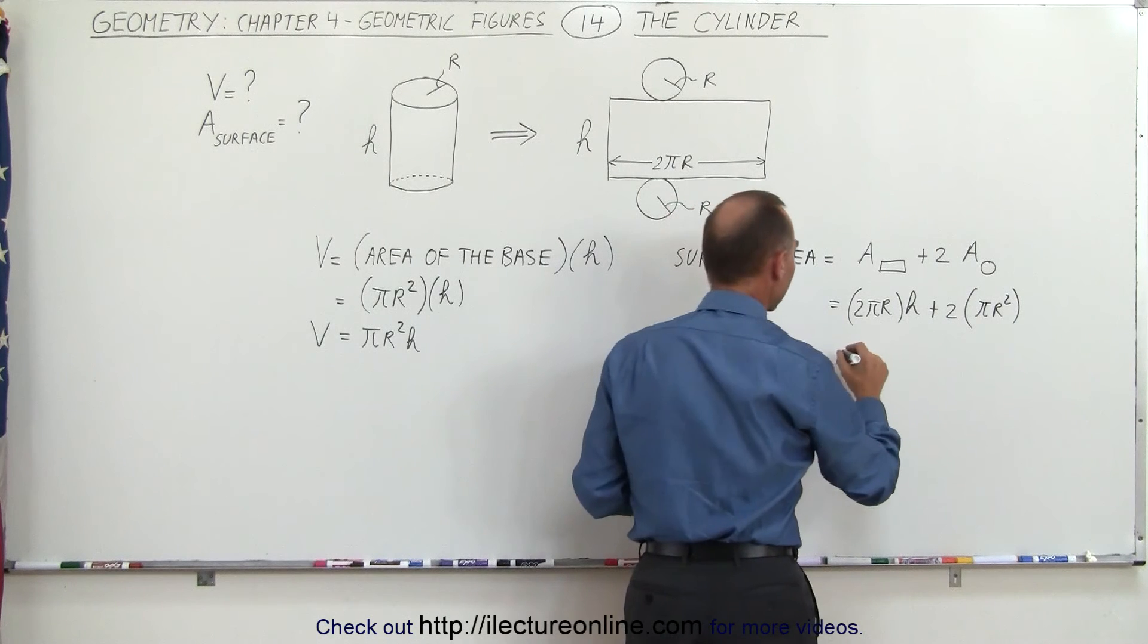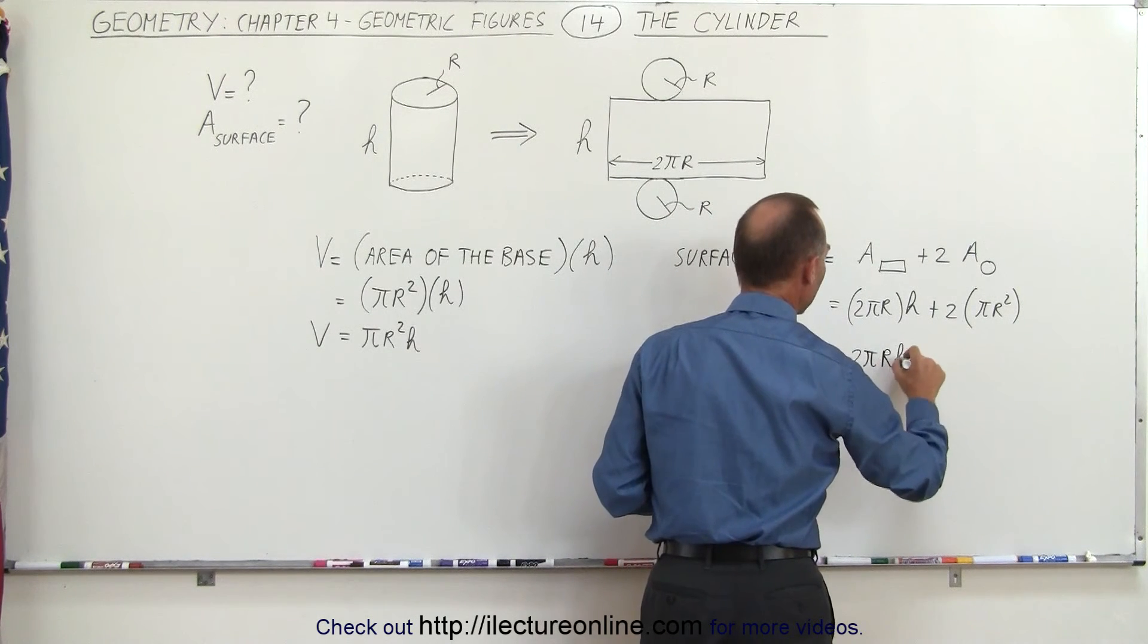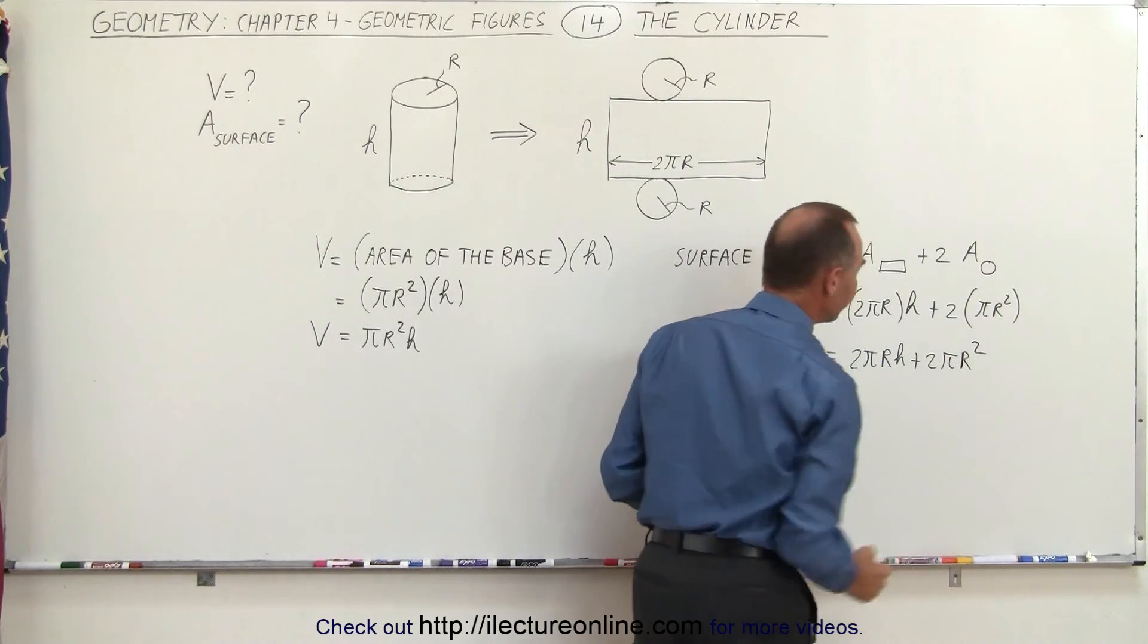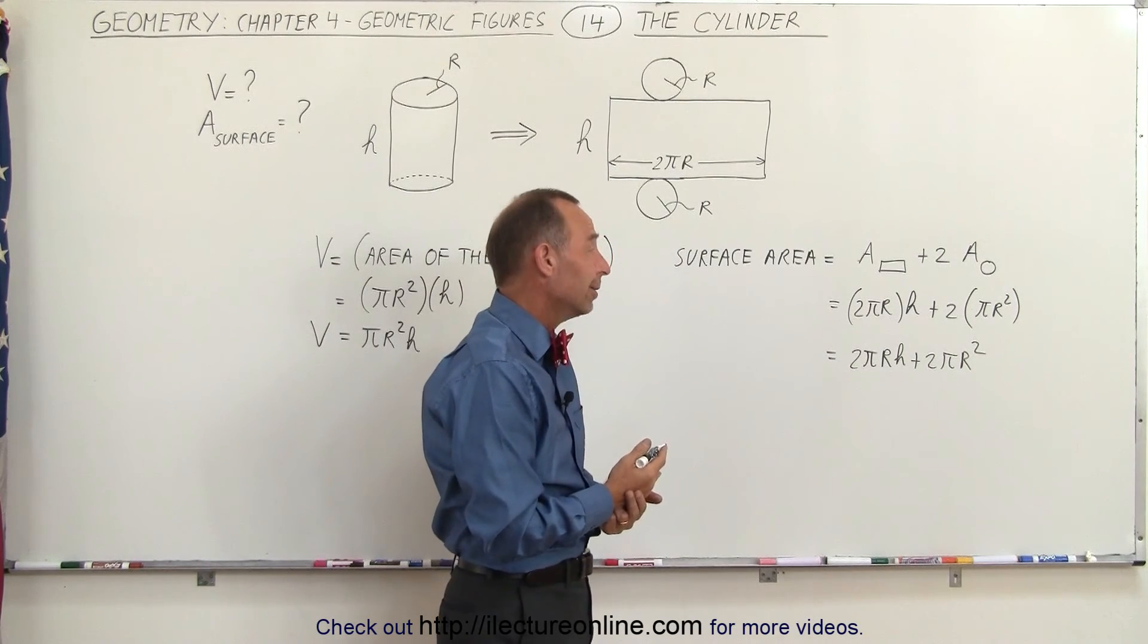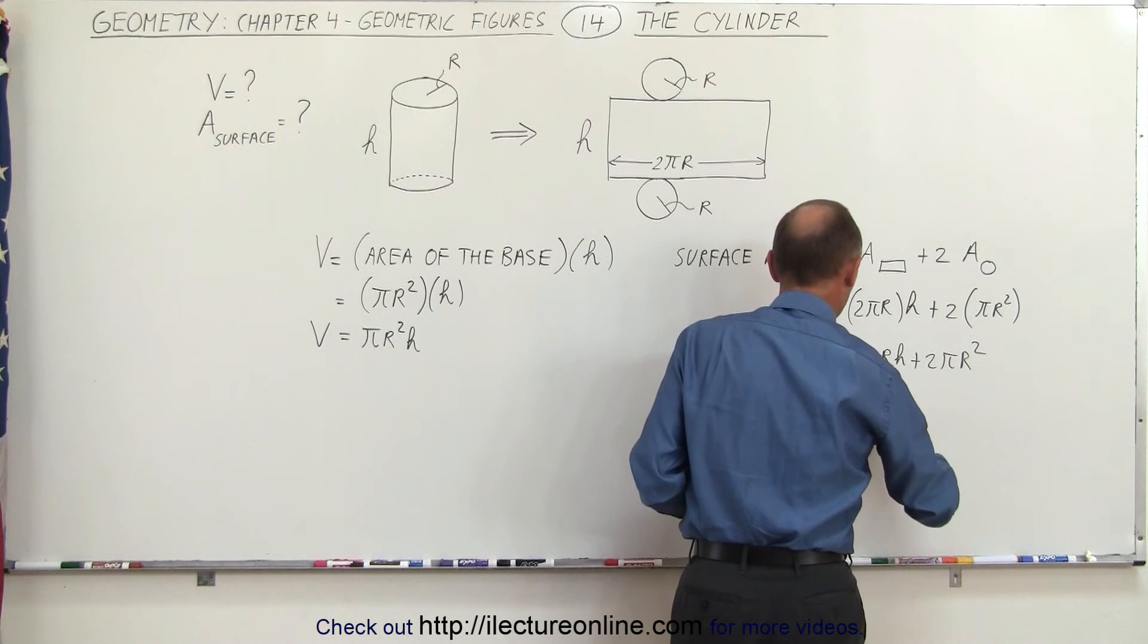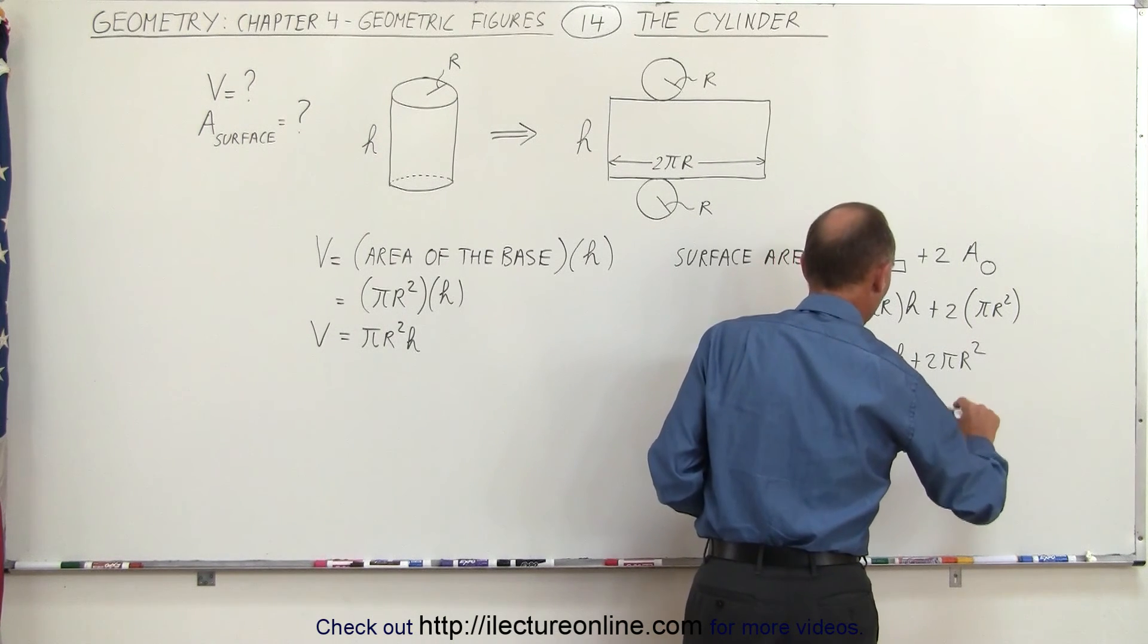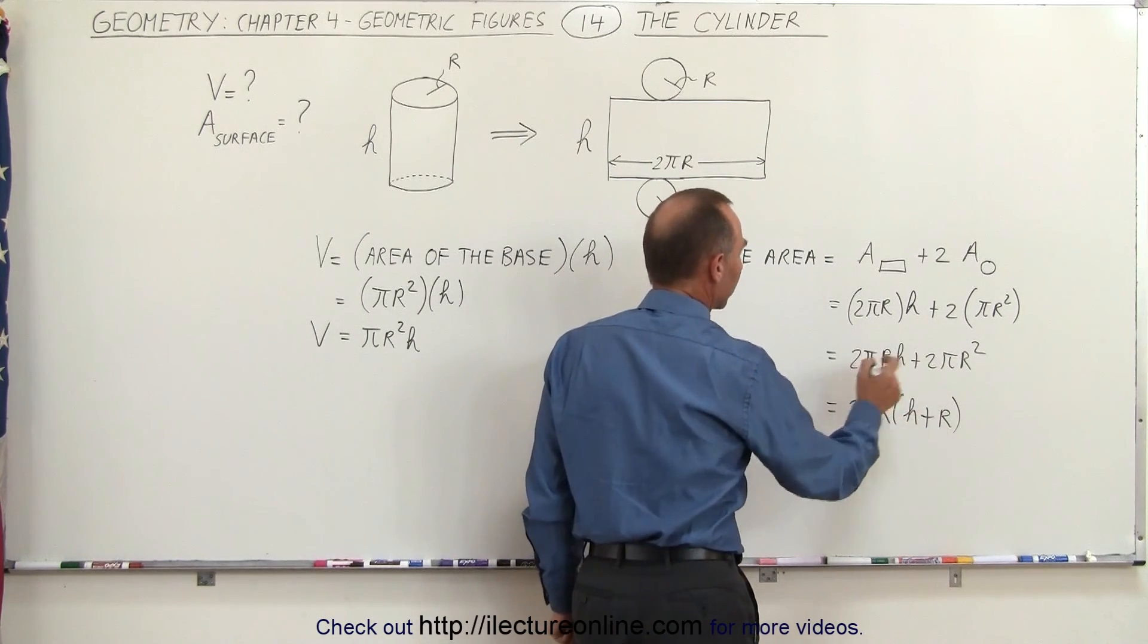And then when we combine that, this can then be written as 2πrh plus 2πr². What you could do at this point is you could factor out a 2πr. You don't need to do that, but it looks a little bit better. This is equal to 2πr times h plus r. So that way, you can make it look like this, or you can make it look like this.